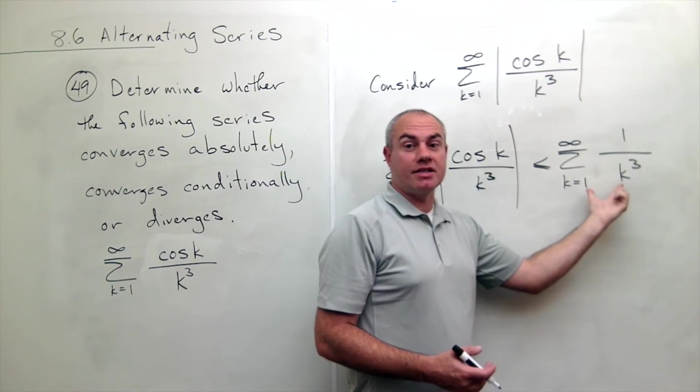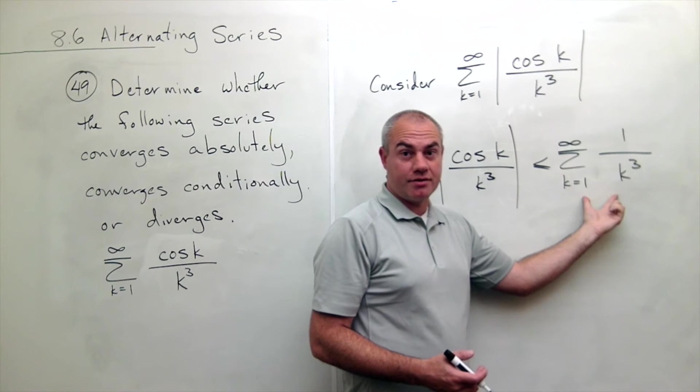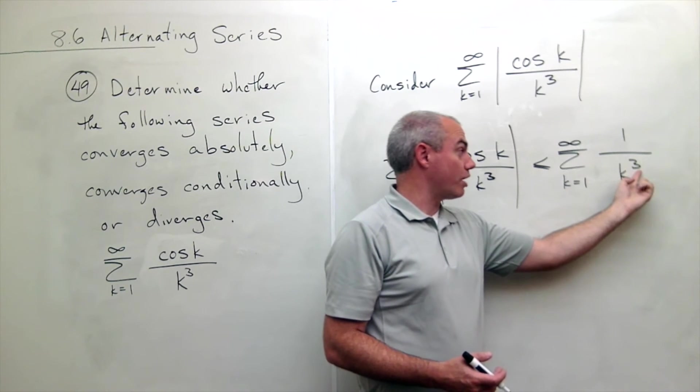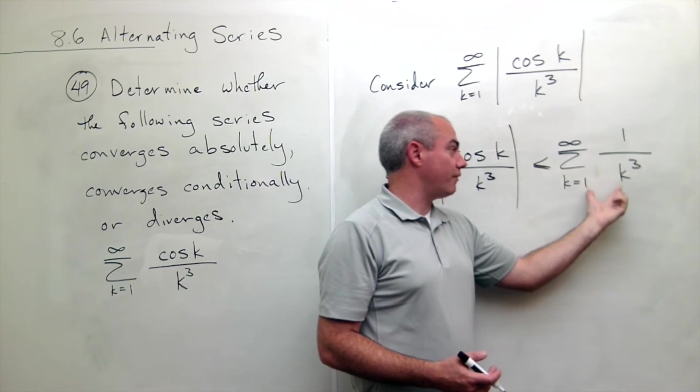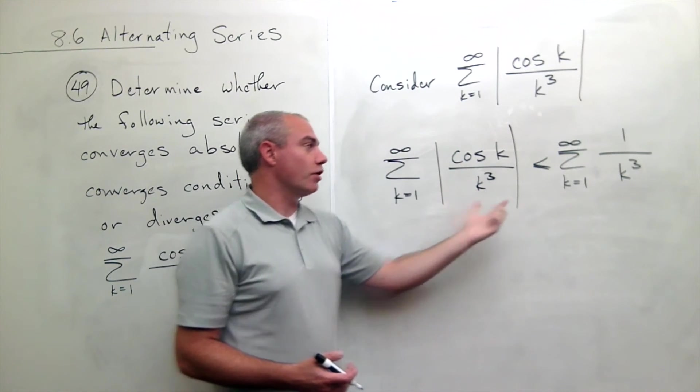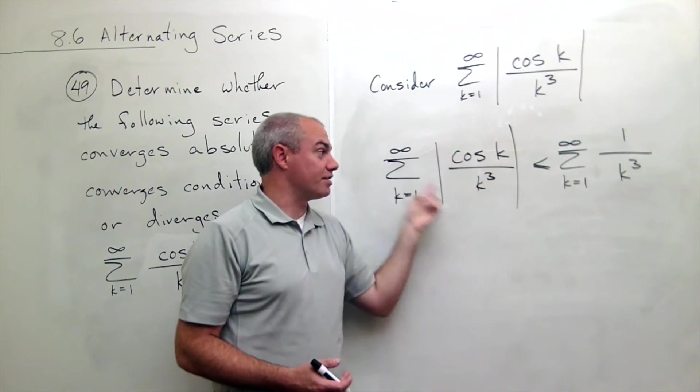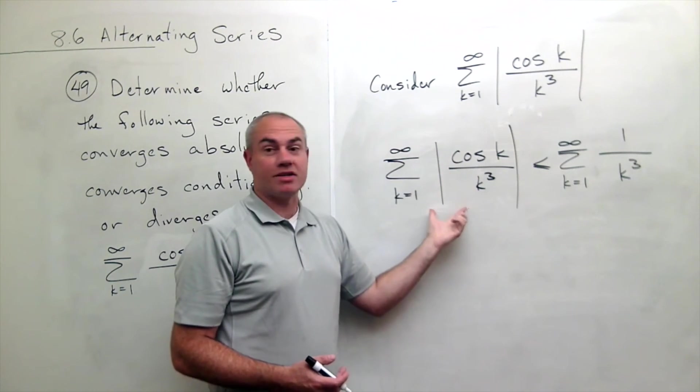But what is this? This is a nice p-series and it converges because p is three. So it's a p-series that converges. And I said that this sum is bigger than this sum. So if something that converges is bigger than some other positive value, then this guy must converge as well.